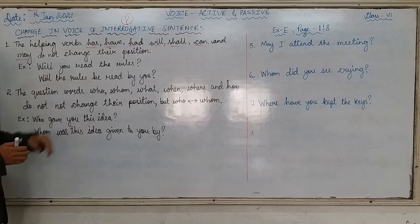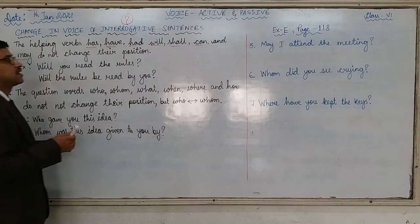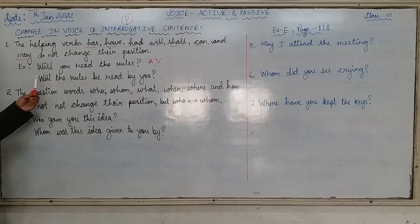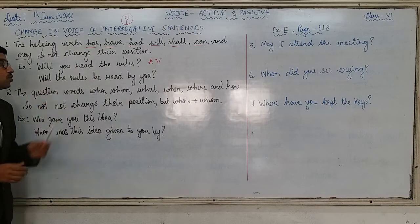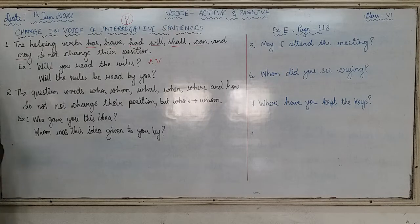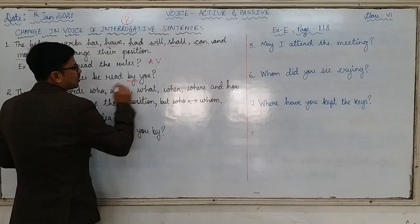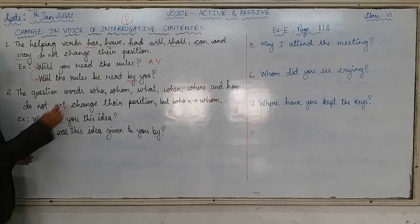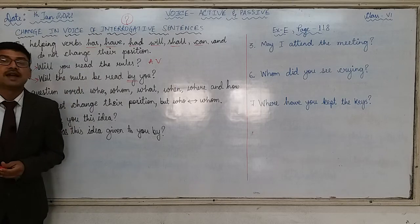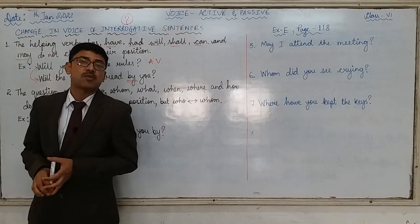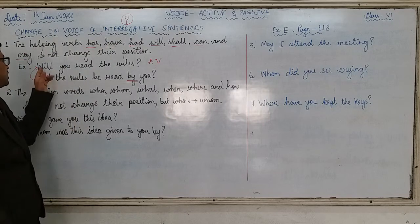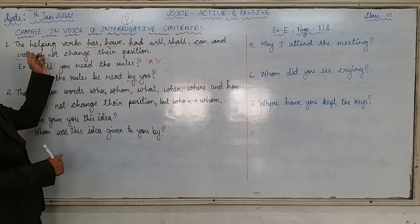Let us see the example: 'Will you read the rules?' is in active voice. When we change it into passive voice it will be: 'Will the rules be read by you?' We have learnt that 'you' remains 'you', so here also 'you' is remaining as 'you'. We use 'by', and you can see 'will' has not changed its place — only the verb has changed its form a little as per the tenses we learnt previously on page number 115.